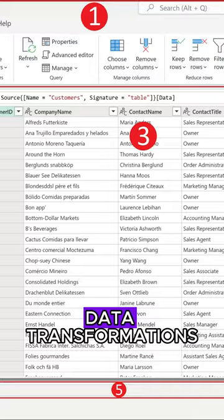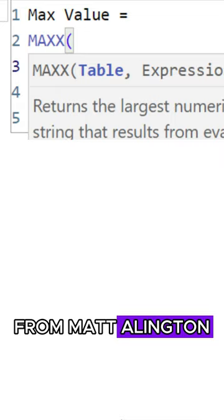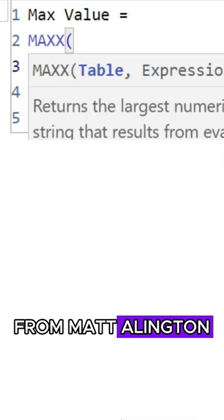The second book is Learn to Write DAX from Matt Allington. I believe there is a new version out there for this book, and I do suggest that you pick up the newest version to be able to learn how to write good DAX and modeling. Pick up these two books and you'll be awesome.